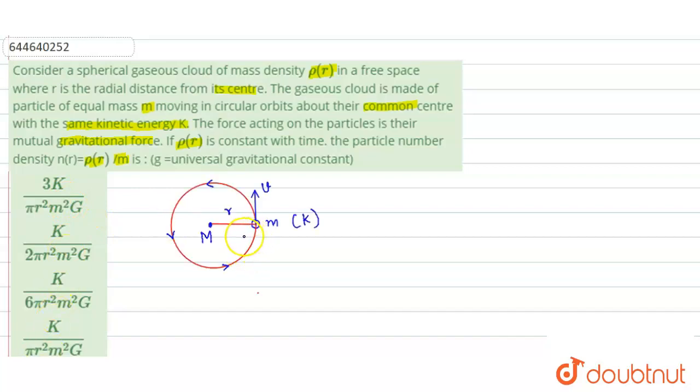So you can see here I have drawn this diagram for better understanding of this question. This is gaseous particles of mass m having kinetic energy k, and let's say their speed is v, and they are moving around their common center.